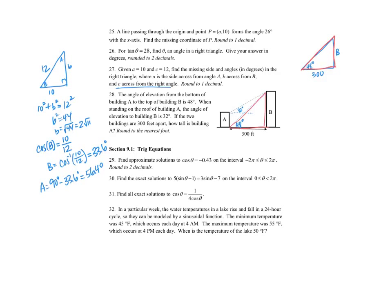Tangent of 48 degrees equals B over 300, so B equals 300 times tangent of 48 degrees. That gives approximately 333.81, so rounded to the nearest foot, building B is 333 feet tall.